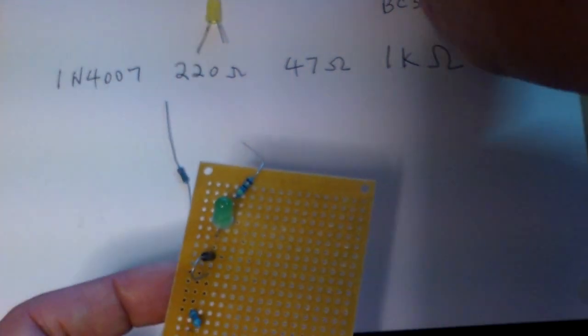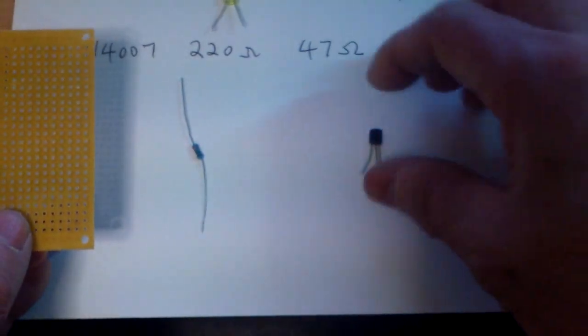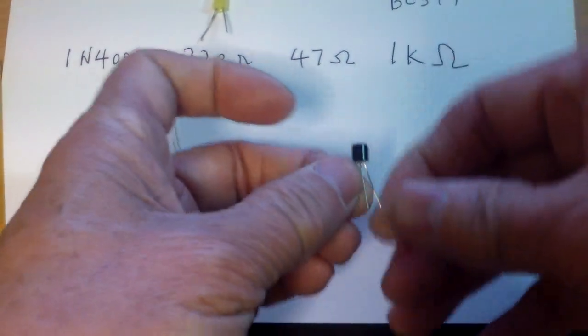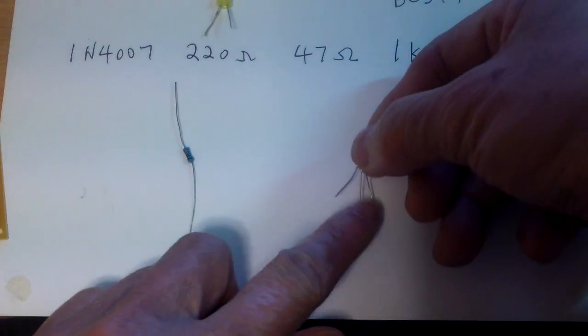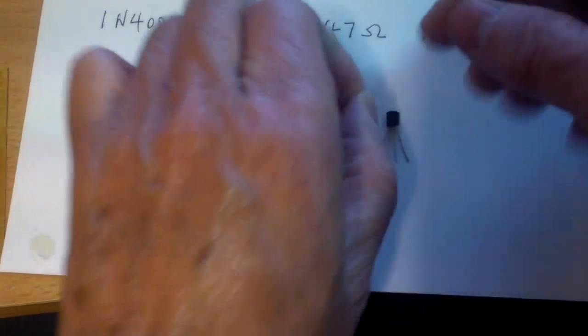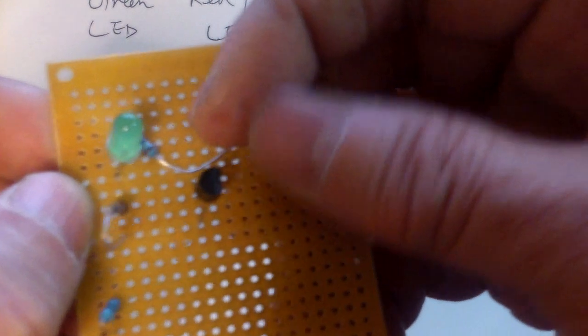And if you lay your transistor flat, there are three legs. The middle one is of course your base. And you would have your collector, base and the emitter. There's a flat side and there's a round side. You put it like that.